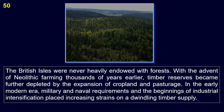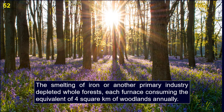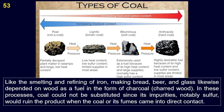Military and naval requirements, along with the beginnings of industrial intensification and construction, placed increasing strains on a dwindling timber supply. Shipbuilding, for example, consumed vast quantities of timber. By the beginning of the 18th century, construction of a large man-of-war devoured 4,000 trees. Just before the American War of Independence, one third of the British merchant marine had to be built in the American colonies with timber remaining plentiful. The smelting of iron — another primary industry — depleted whole forests, each furnace consuming the equivalent of 4 square kilometers of woodlands annually. Making bread, beer, and glass likewise depended on wood as a fuel in the form of charcoal.